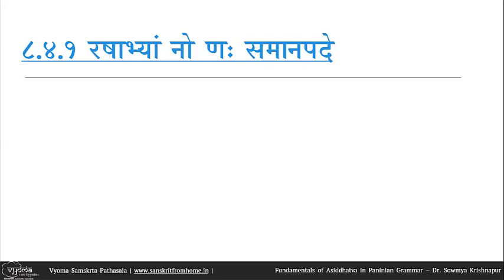Natva is given by a section of sutras in 8.4 — not one or two sutras, but almost 35 to 40 sutras are involved in what we call the natva prakarana. The most important of these rules are the first two: the first rule is rashabhyam nona samanapade.